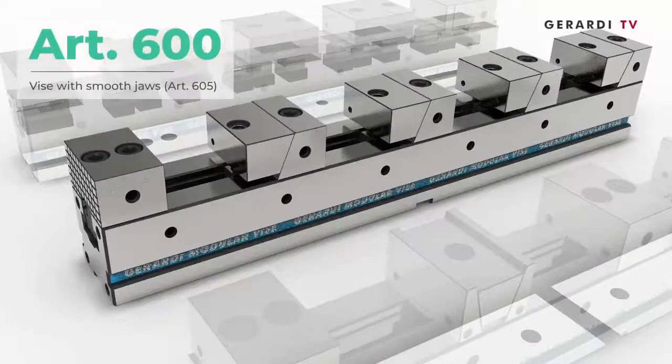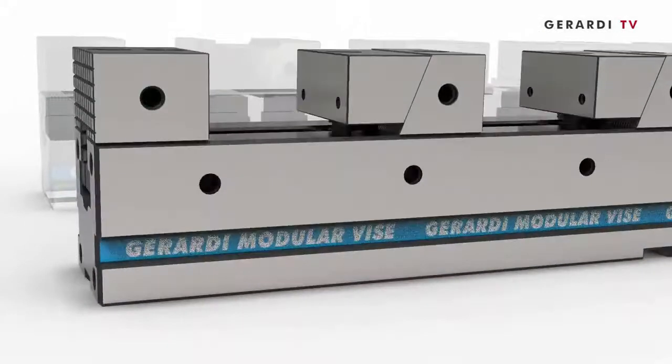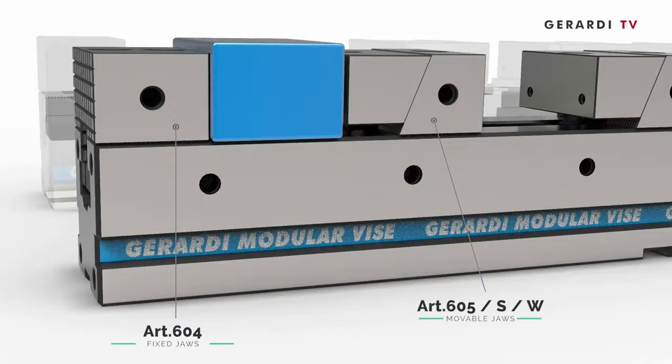Article 600 with smooth jaws for workpieces clamped directly on vise base.